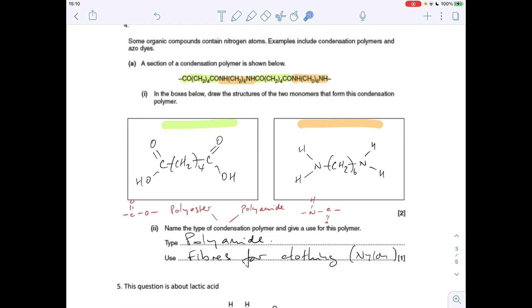Next part of the question, name the type of condensation polymer and give a use for it. Well, there's two types of condensation polymer. Polyester obviously contains the ester group. Polyamide contains the amide group. Well, you can see we've got the CONH group, so it's a polyamide. And a use for this type of polymer, fibres for clothing is what I would say. So things like nylon is made from polyamides.